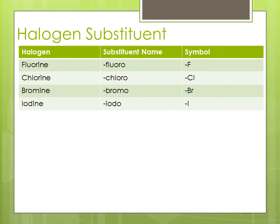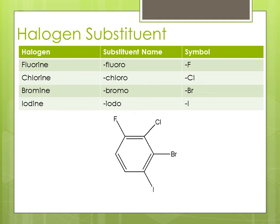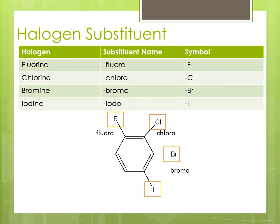Halogen substituents. Sometimes a halogen will take the place of a hydrogen in an organic molecule, and they're named as follows: fluoro, chloro, bromo, and iodo.